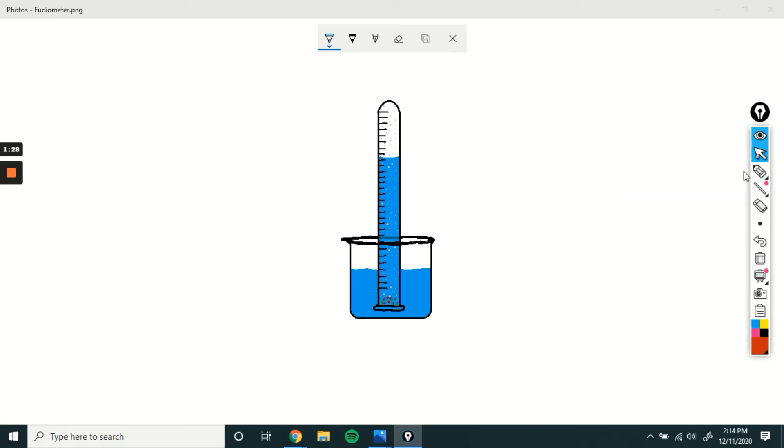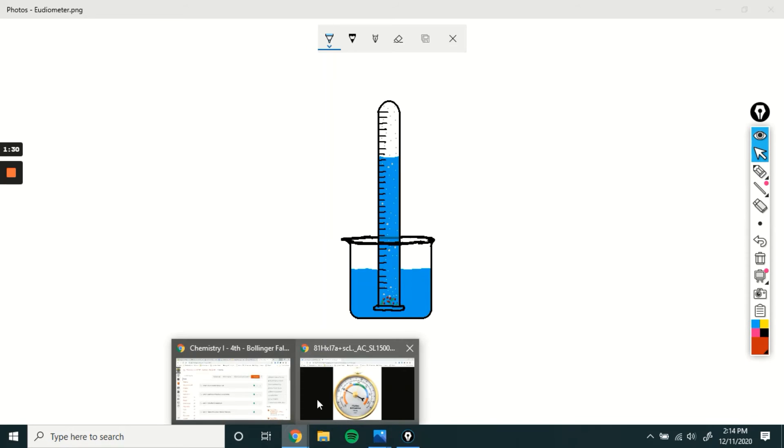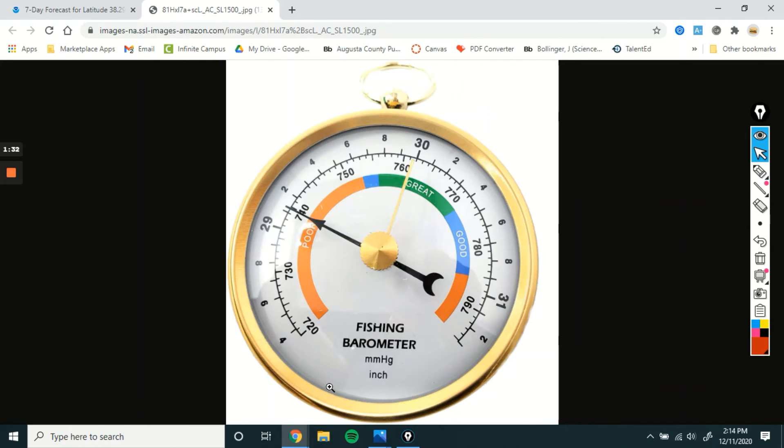So I actually did not have a barometer on hand, but this is what one would look like. There's different kinds, but they have little needles and essentially they've got their little gauges and stuff in the contraption to determine and it has this little needle and it's going to tell me the barometric pressure. Now, usually we want millimeters of mercury. So we would be looking at this inner circle, right, the 720, 730, 740, and so forth. You can ignore this whole poor, great, and good stuff. I don't know what that's for, right? But we're looking at millimeters of mercury.